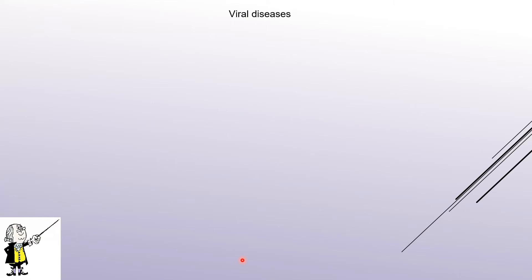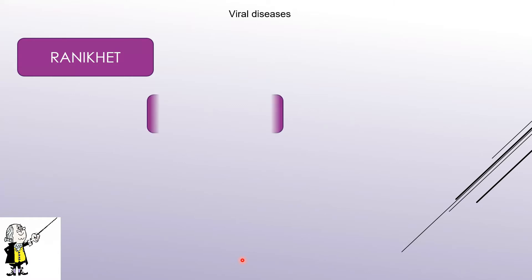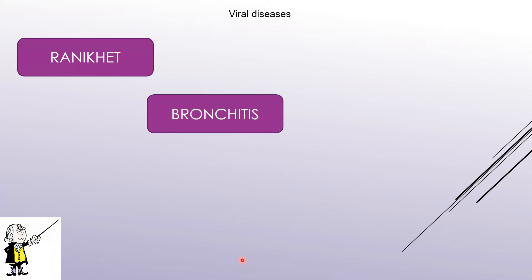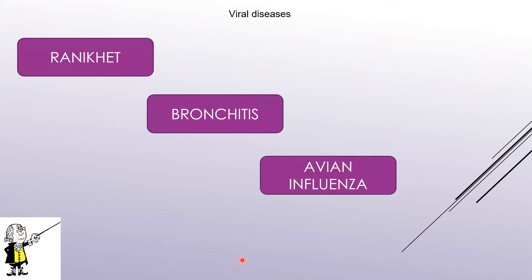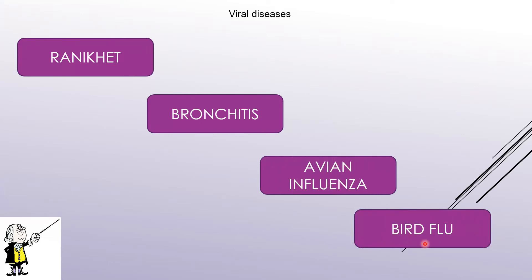Let us study about the diseases that poultry farm birds are subjected to. The first group is viral diseases, which include Ranikhet disease, bronchitis (that is, inflammation of bronchioles — a respiratory disorder), and avian influenza, also called bird flu. Bird flu is a very common disease; when birds are infected, the entire flock is killed so that the disease does not spread from chicken to human beings.